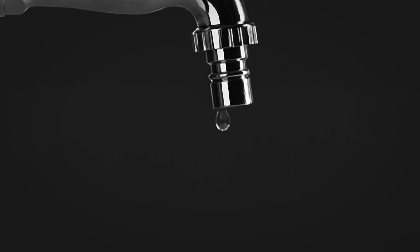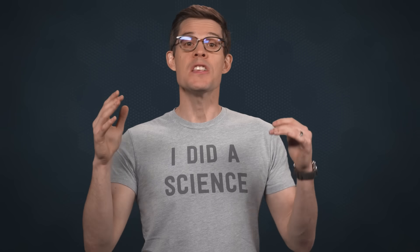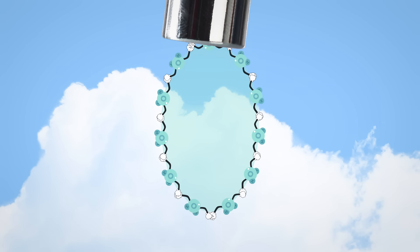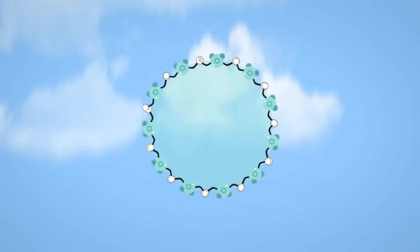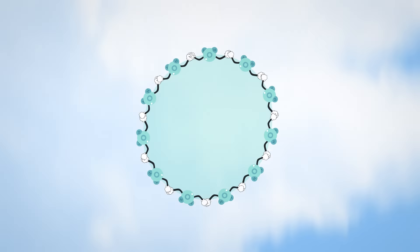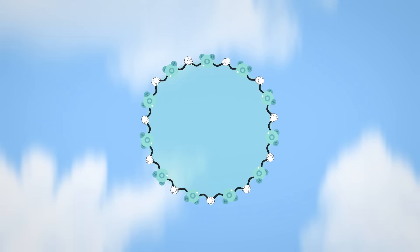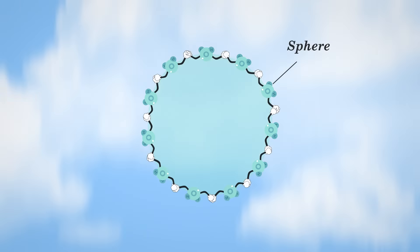When water drips from a faucet, each drop does kind of take on a teardrop shape as its tail drags behind it — but only for a split second. Pretty quickly, the drops become blob-shaped. That's because surface tension takes over. Surface tension happens because water molecules are more attracted to each other than to the air around them. So once they split from the faucet, they form the shape with the smallest surface area for its volume, which is a sphere.